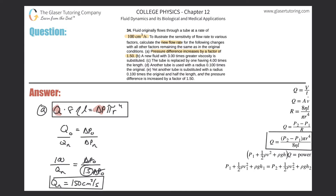And that should make sense according to our original formula: we said that if the change in pressure goes up by 1.5 times, Q will also increase by that same amount, 1.5 times.